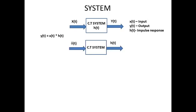What is called impulse response? Here we have seen that h(t) is called impulse response. Impulse response h(t) is nothing but the output of the same system when the input applied to the system is an impulse input. You know very well what is called an impulse input. When this impulse input is applied to the system, the corresponding output you get is called the impulse response h(t).